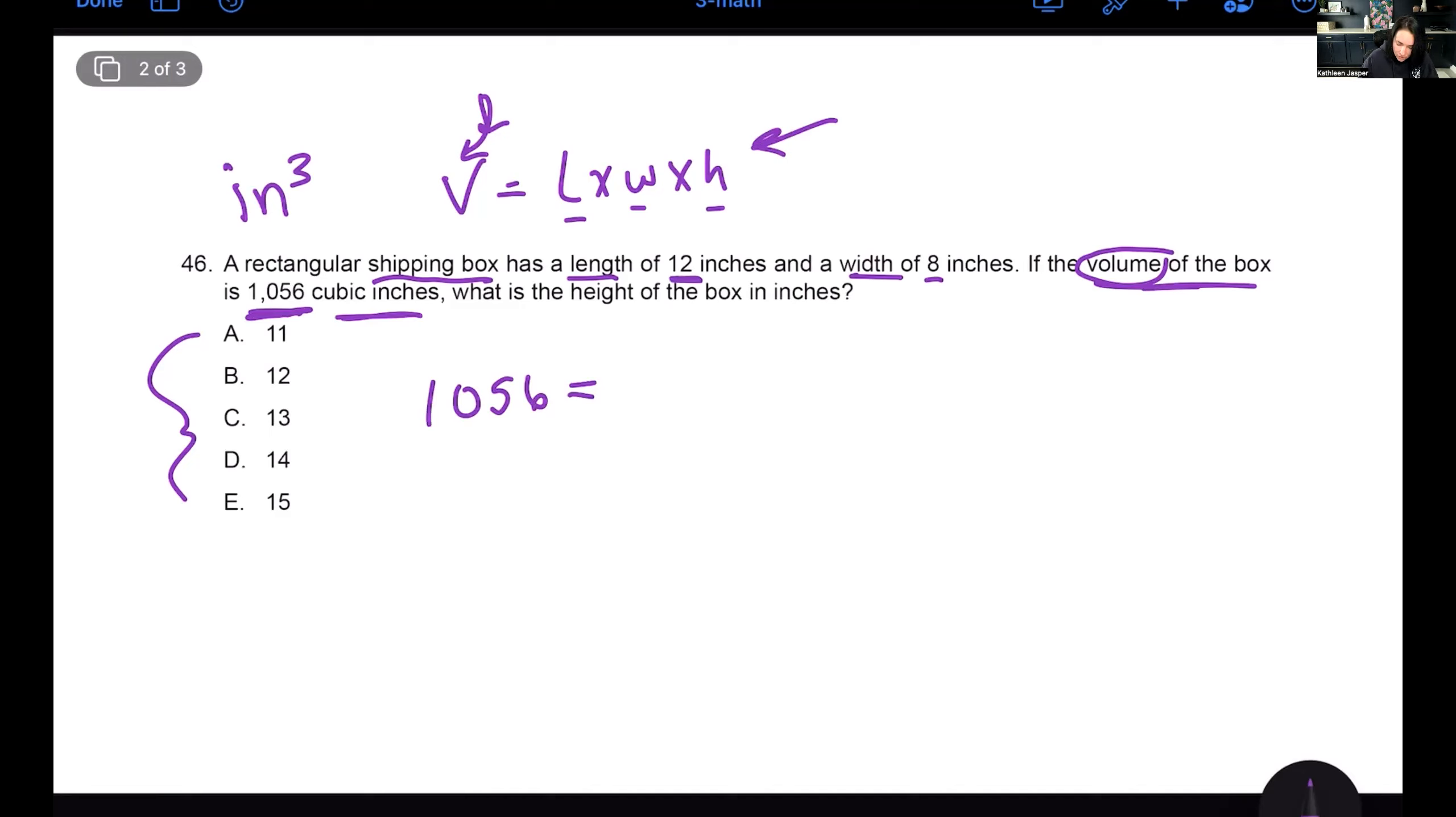That's why they call it cubic inches because you have three measures here, length, width, and height, because it's a three dimensional figure. Now, all we need to do is use this formula in order to solve the problem. I have the volume, right? I have this V here. It's 1056. The volume of the box is 1056. So I just put equals. I'm using the formula. And I have the length, the length is 12. I have the width, which is eight inches. But I do not have the height.